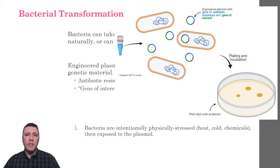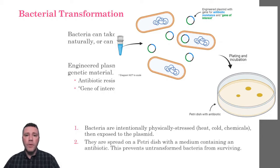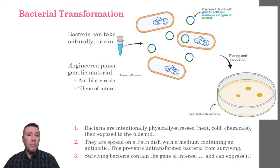Bacteria are first subjected to physical and chemical stressors that increase the likelihood that they will take in the plasmid that they're exposed to in their environment. Some bacteria will take in the plasmid and be transformed, while others will not. The bacteria are then spread on a petri dish containing an antibiotic. Those bacteria that were transformed will have the ability to survive in the presence of the antibiotic, but the untransformed bacteria will be killed off. The surviving bacteria not only possess copies of the gene of interest, they can also manufacture the protein the gene codes for by expressing it.